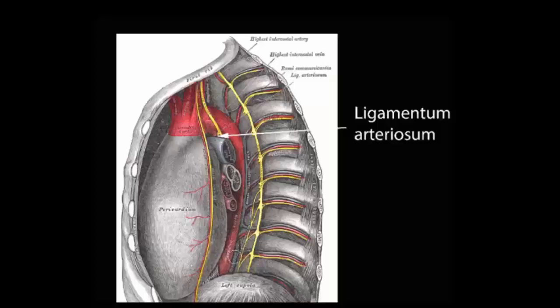It's known as the artery of Adamkiewicz, which is a particularly large one that supplements the circulation to the spinal cord and is an important branch because if it's damaged by surgery or trauma, it can cause ischemia of the cord or necrosis of the cord.